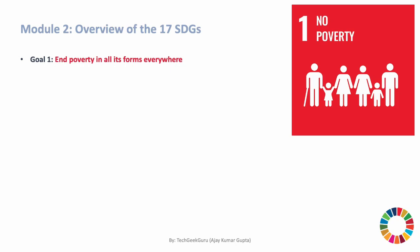Goal 1 of the Sustainable Development Goals, SDGs, is to end poverty in all its forms everywhere. This goal addresses the key issues related to poverty and aims to ensure that everyone has access to basic necessities and opportunities for a better life.